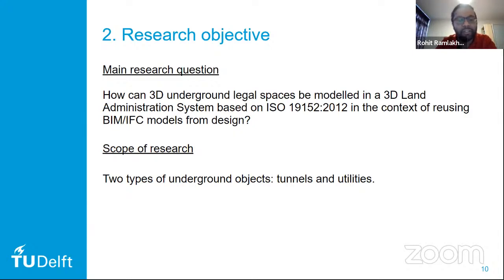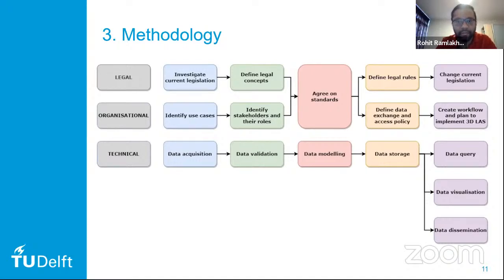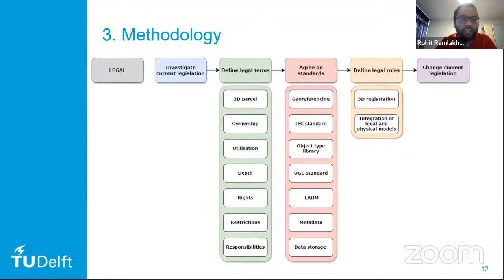My research is limited to two types of underground objects — tunnels and utilities — because they comprise the largest part of the urban underground space. The workflow has three aspects: legal, organizational, and technical. I will elaborate on each of these parts. First, we'll start with the legal part.